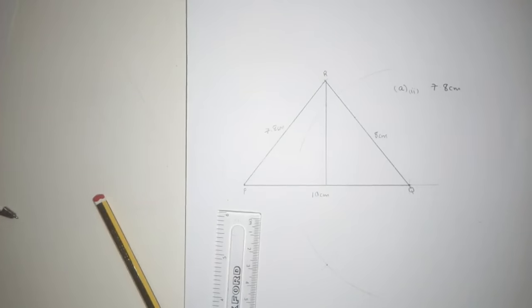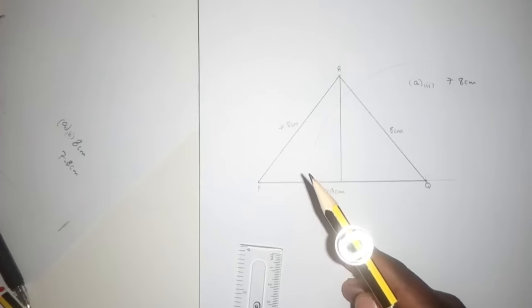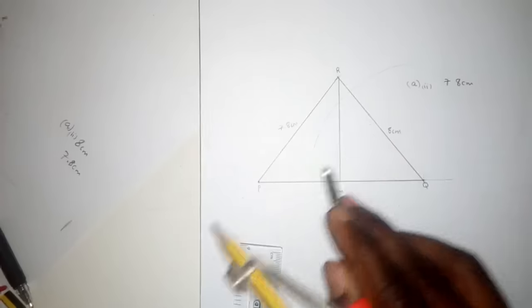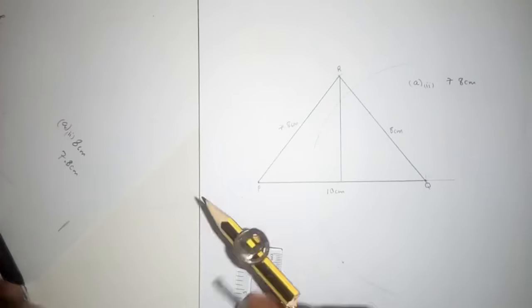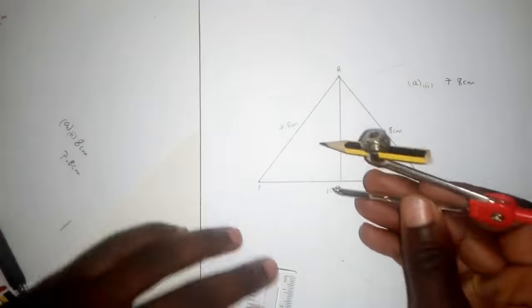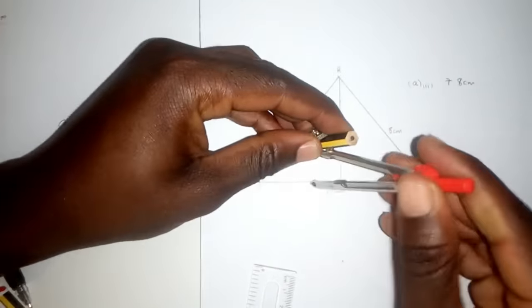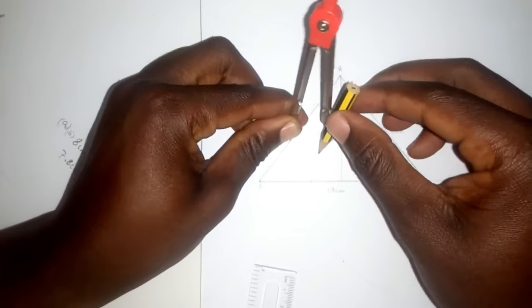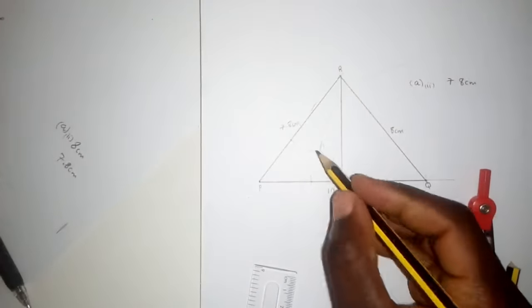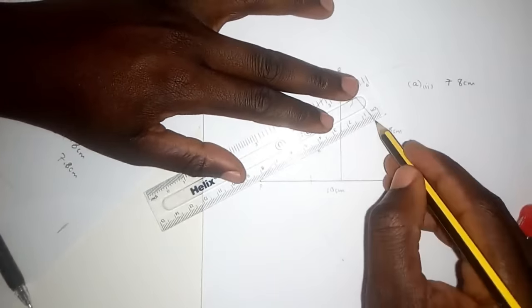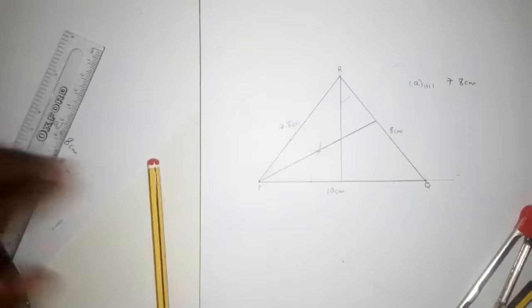The next part says equidistant from PR and PQ — your line should pass in between them. Check the letter which is common: P is common, so go to point P. Bisect an arc on each side to find where the angle bisector will pass, then join those two points. That line should be inside the triangle.